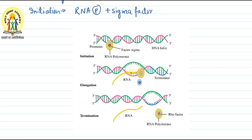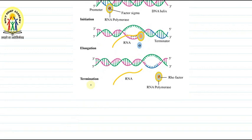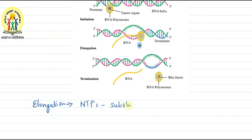What happens in elongation? In the elongation step, RNA polymerase uses nucleotide triphosphates (NTPs) as substrate. These NTPs act as a substrate, and polymerization takes place according to complementarity — if there is C on the DNA template, then G will be added; if there is A, then T will come. So in elongation, the nucleotide triphosphates act as substrate and the RNA chain keeps growing.